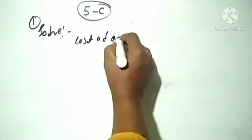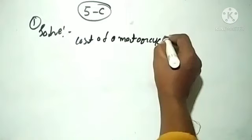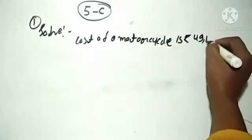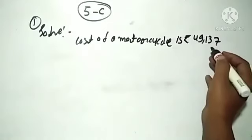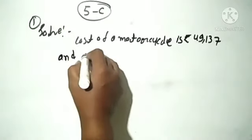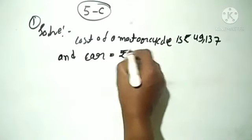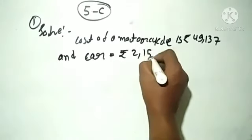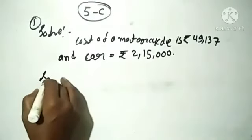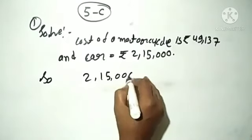Question number first solution: Cost of a motorcycle is rupees 49,137 and the car's cost price is 2,15,000. So from 2,15,000 we will subtract 49,137.